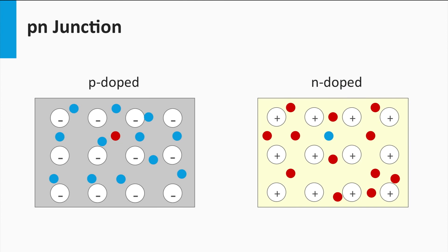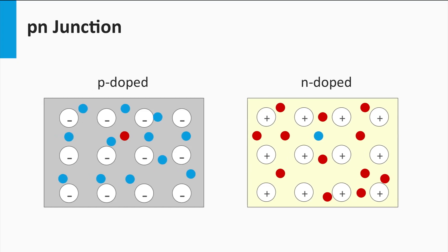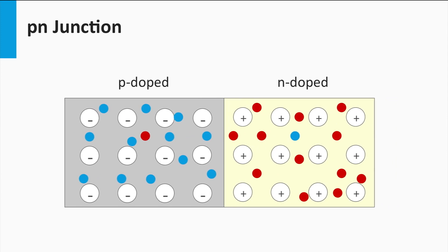Last week we showed that we can dope semiconductor materials N-type and P-type. In P-type, the holes are the majority charge carriers, and in N-type, the electrons are the majority charge carriers. If we have a semiconductor in which one part is doped P-type and another part is doped N-type, we have created a so-called P-N junction.